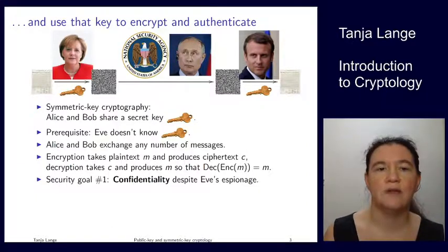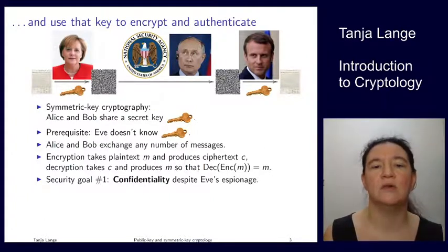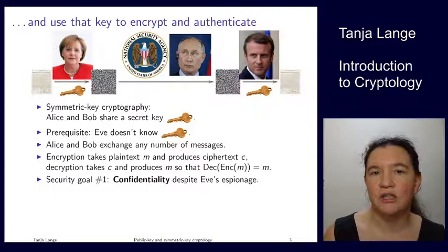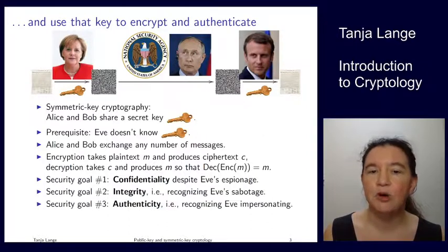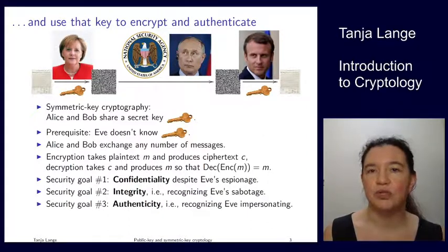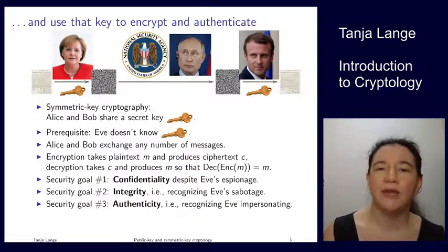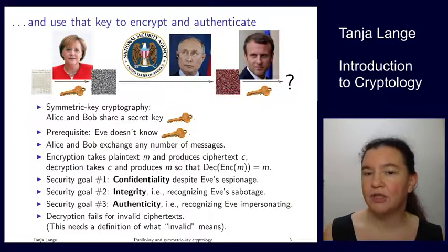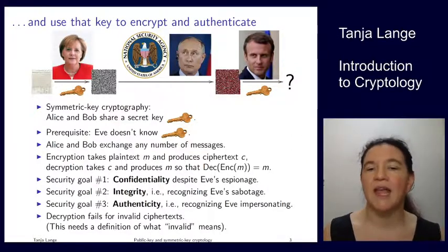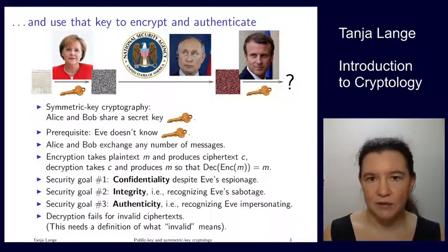If they satisfy the prerequisite that they both share a secret key and that Eve does not know this key, then they can exchange messages securely, where the encryption part achieves confidentiality. We've also been looking into adding something more to this encryption, which authenticates the message. At that point we're getting integrity and authenticity, so that if Eve is trying to modify the message, then Bob says this was not a valid message.